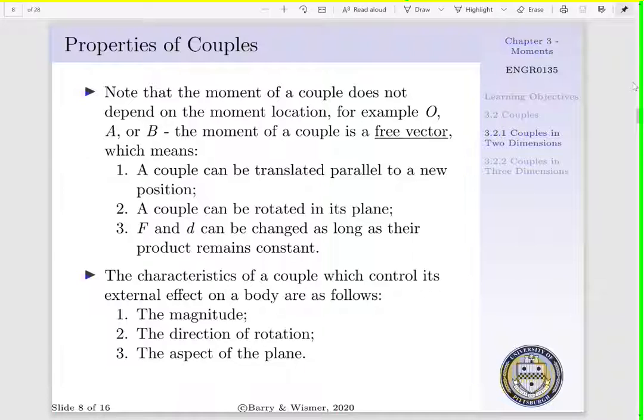A couple can be rotated as long as our F times D ratio remains the same. And the characteristics of a couple which control its external effect on a body are its magnitude, the direction of rotation, and the aspect of the plane. The aspect of the plane is related to the direction of rotation.